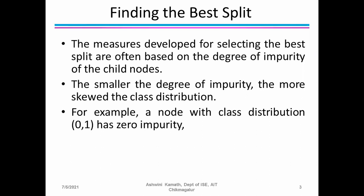When we have nodes adding on only one side — left or right — it is called skewed. When examples belong to the same classification, that is called a skewed distribution. We need a skewed class distribution so that the degree of impurity will be smaller for the child node. For example, a node with class distribution (0, 1) has zero impurity — zero means it doesn't belong to class 1, and 1 means it belongs to class 2.